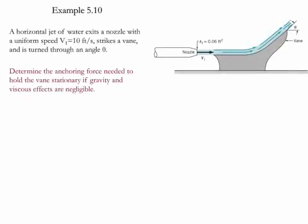Example 5.10. In this example we have a horizontal jet of water which exits a nozzle at a uniform speed of 10 feet per second as it strikes a vane and is turned through an angle theta. We need to determine the anchoring force needed to hold this vane stationary if gravity and viscous forces are negligible.